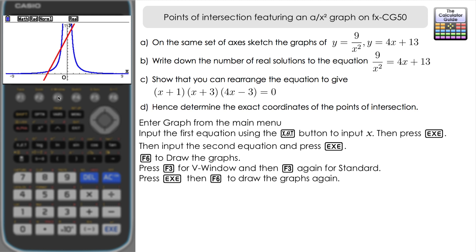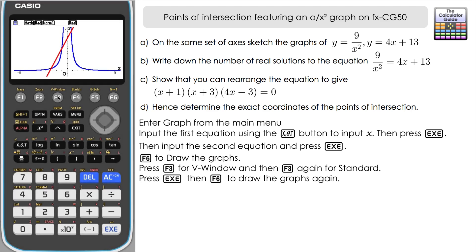Why is that? If you square any value — positive or negative — you always get a positive result, so we've got positive 9 over another positive number, which always gives a positive result. Therefore, there's no part of the blue graph in the negative y-section. We can use that information and what we see on screen to draw a sketch of these graphs, which should look very similar to what we have on the calculator.